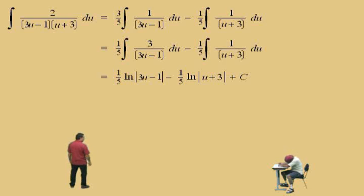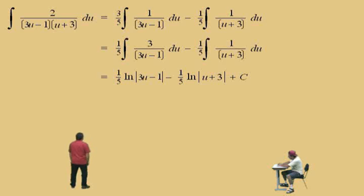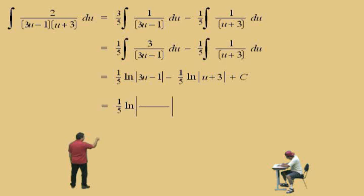What do we have to do, Charlie? We have to replace u with tangent of x over 2. We can first combine those logarithms, because it's one-fifth natural log of |3u minus 1| minus one-fifth natural log of |u plus 3| plus C. The difference of logs is the log of the quotient, so we can write this as one-fifth natural log of (3u minus 1) over (u plus 3) plus C.